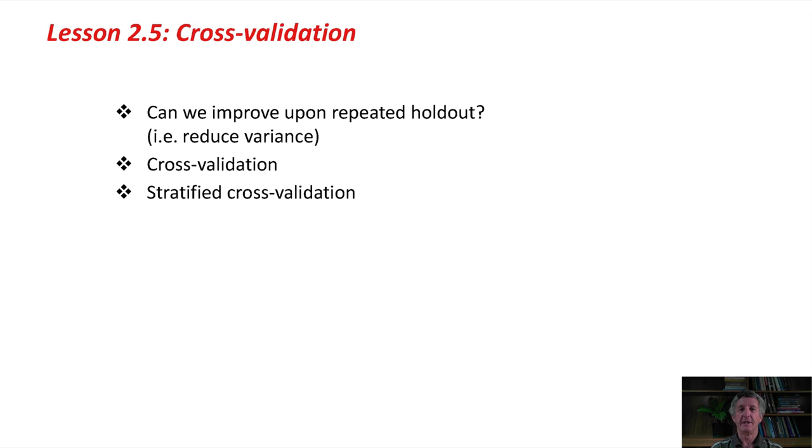Cross-validation is a way of improving upon repeated holdout. We tried using the holdout method with different random number seeds each time, and that's repeated holdout. Cross-validation is a systematic way of doing repeated holdout that actually improves upon it by reducing the variance of the estimate.